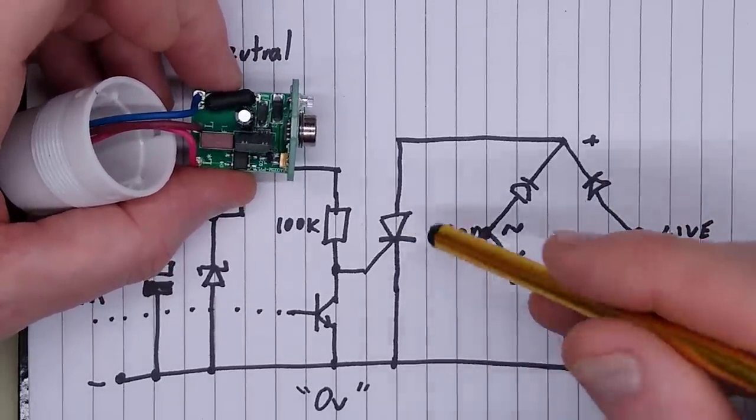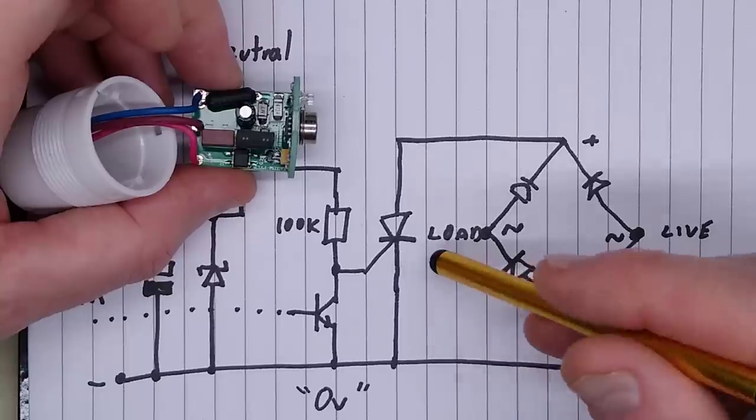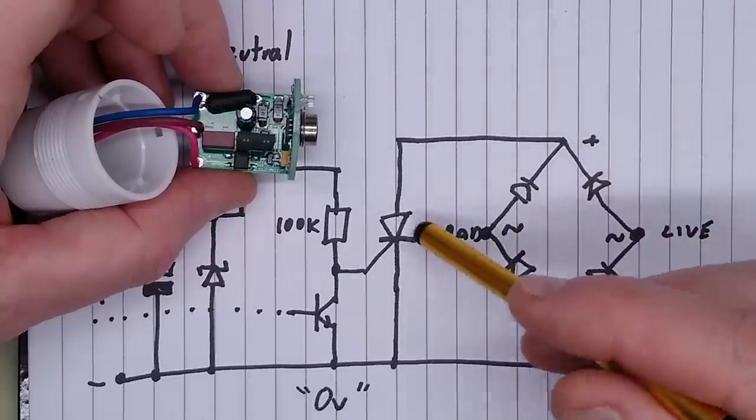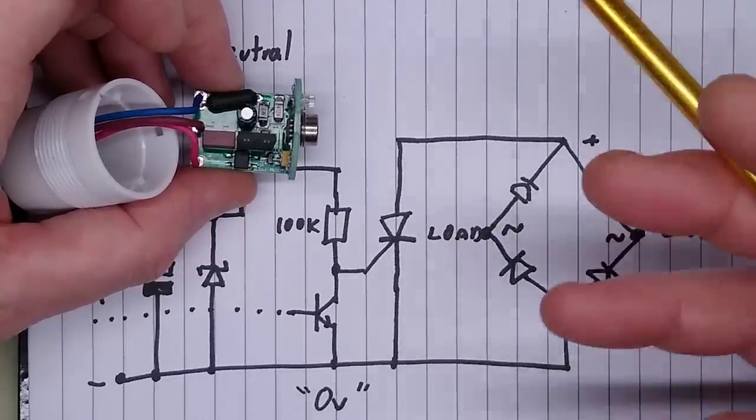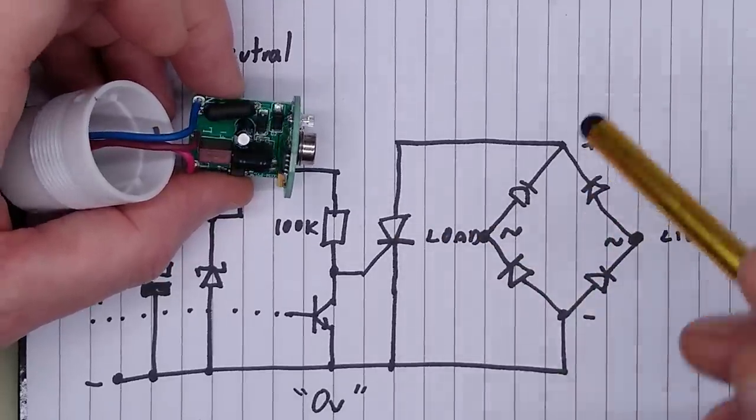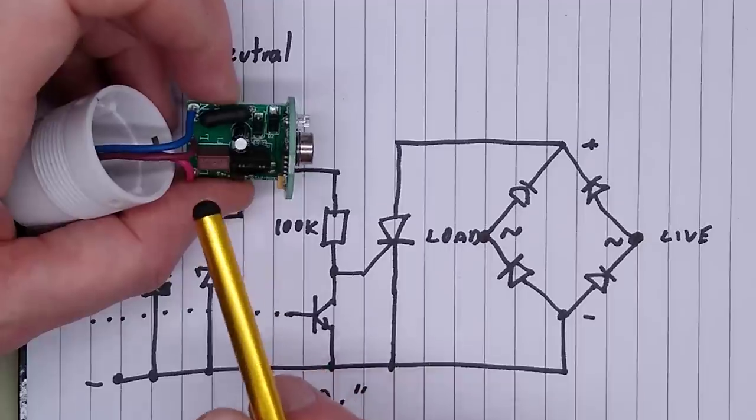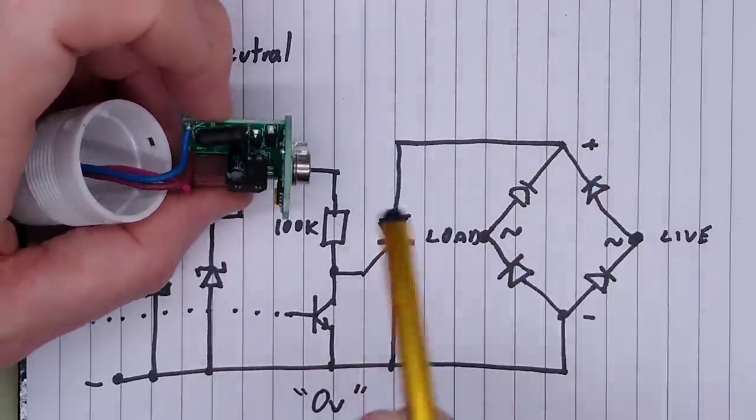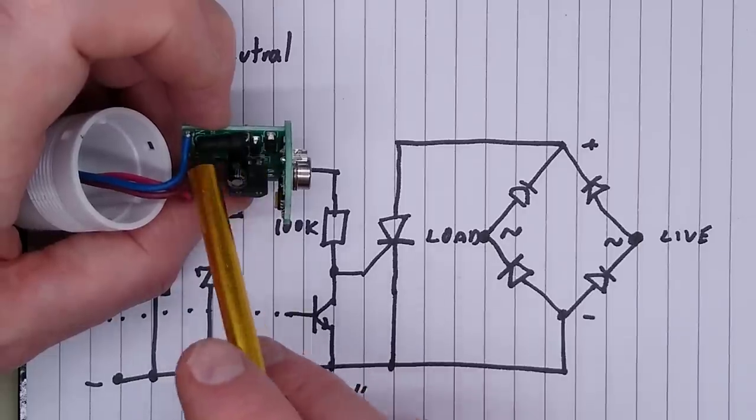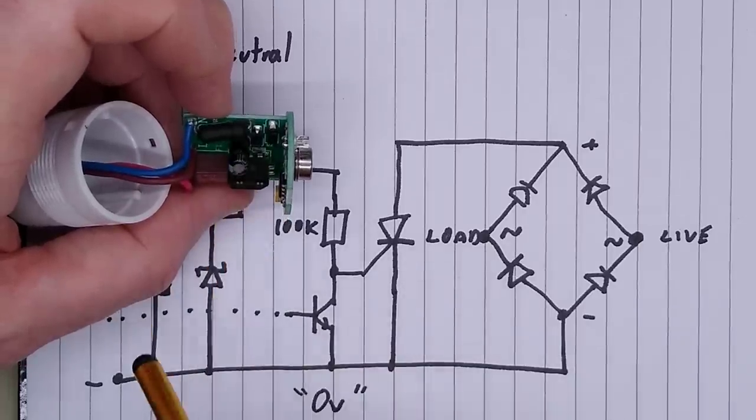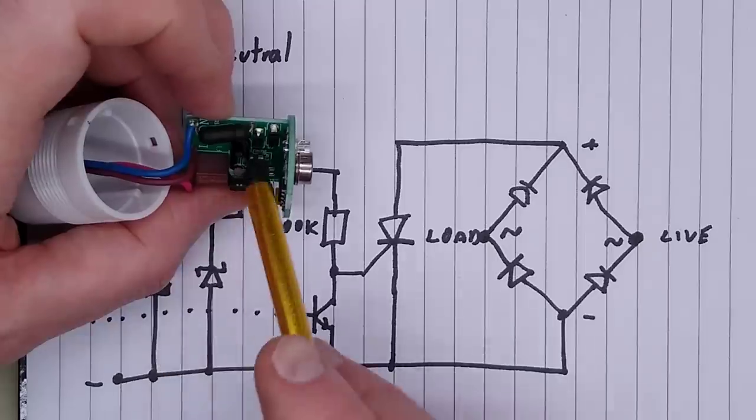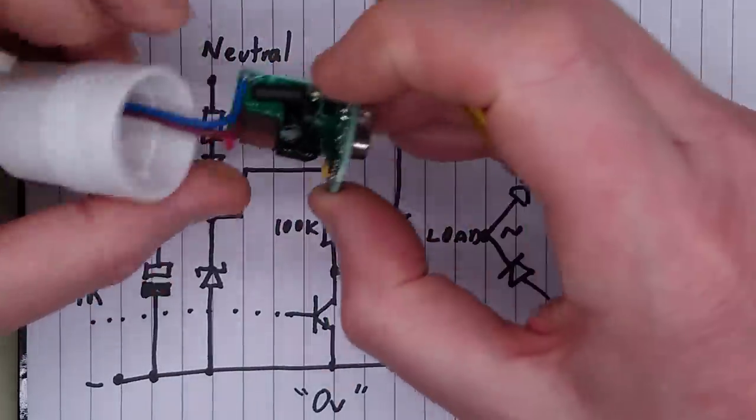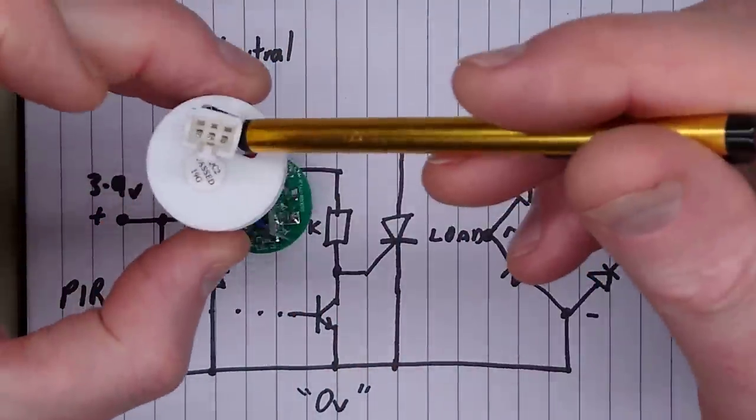This is where it gets very interesting - to switch the AC load with the thyristor, the advantage of thyristors over triacs are you can get very sensitive ones. This one can be turned on by literally just a few microamps of current. Triacs tend to require several milliamps, and when they require several milliamps they need something like a capacitive dropper to provide that, which starts eating up space. In here, the only power supply is this 39k resistor which is dissipating over half a watt, and it's next to a capacitor. It's got to get warm in there, but it is well ventilated.